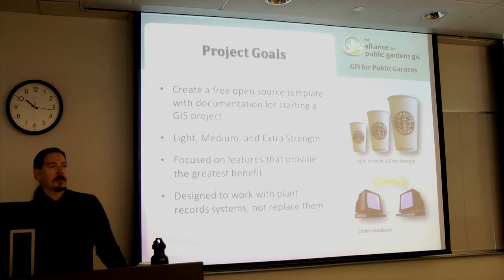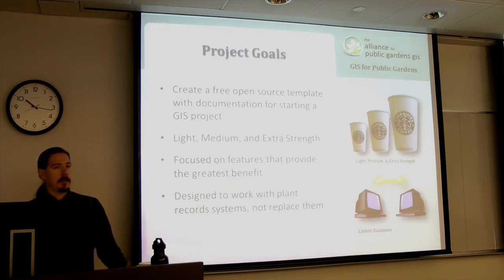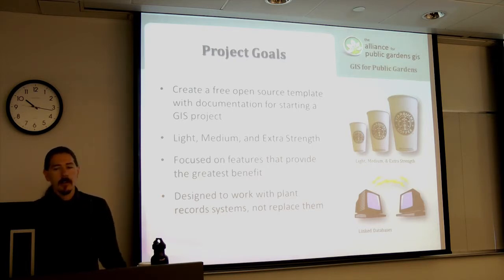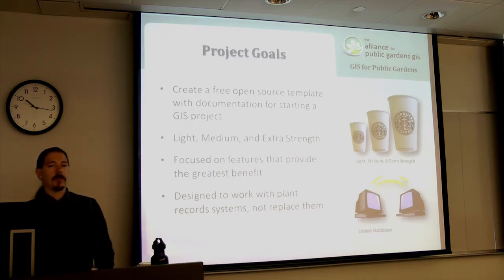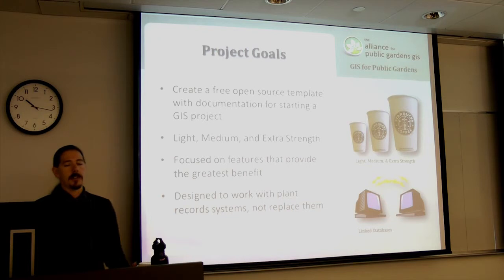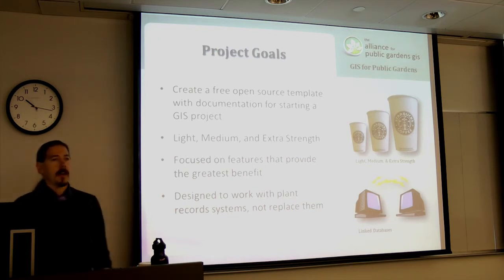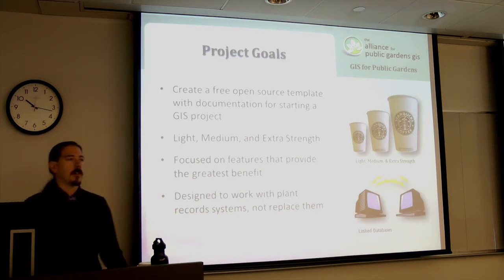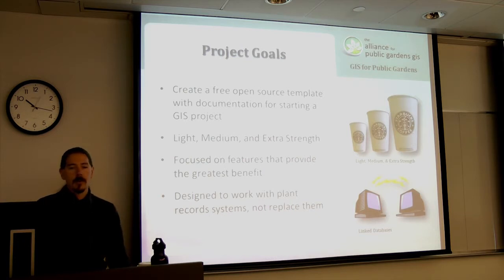The goal of the project was to create a free and open source template with documentation for starting up a GIS project. Free — you don't have to pay anything for it; you can download it by providing your contact information. Open source meaning it's totally changeable and you can customize it to your heart's content. We look at it as a template you can add things to, delete things from, and customize to serve your garden's needs. We knew that gardens come in all different sizes and operating budgets, so we wanted to make it adjustable to all those different uses.